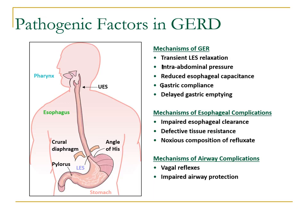The main mechanism putting patients at risk of reflux is transient lower esophageal sphincter relaxation. Other factors include increased intra-abdominal pressure — like patients with uncontrolled asthma or cystic fibrosis — impaired gastric compliance, or delayed gastric emptying, such as in patients with neurological disorders. The esophagus can be injured due to impaired esophageal clearance, defective tissue resistance with mucosal changes, or the noxious composition of refluxate, whether acidic or alkaline such as bile reflux.